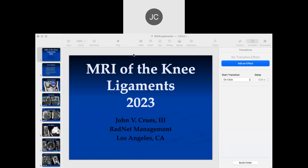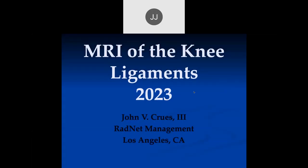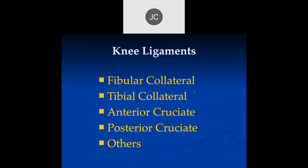It used to cost $15,000 and it would hit the target 50% of the time. Let's go on to MRI the ligaments of the knee. We'll talk about the fibular collateral ligament, tibial collateral, anterior and posterior cruciates, and then a few others.